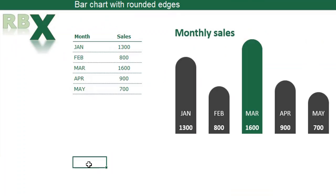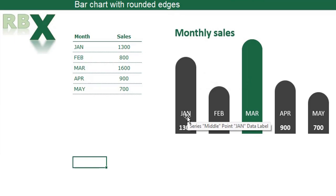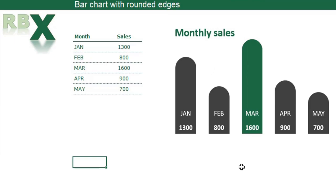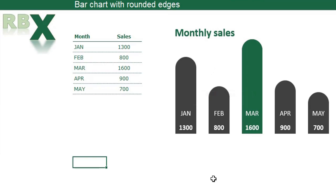In this video I'm going to show you how to create this beautiful bar chart with the rounded top and the data labels within — a double data label with the month and the value. It also has conditional formatting where the highest value is shown as a green bar in your chart and the other bars are black. I'm going to show you how to create this chart step by step.